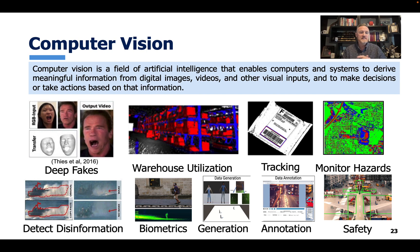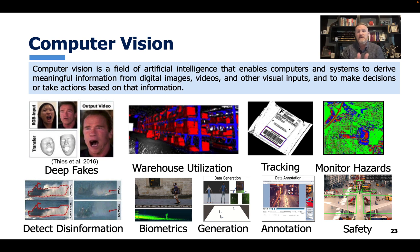In the lower left is an example of detecting disinformation. You can look at objects — in one image there's a normal wake from a boat, and in the other there's no wake. Those types of visual cues can help us detect disinformation or mistakes in fake information. Biometrics is another application — can we improve tracking individuals based on their gait, patterns in their walk, or other types of biometrics?